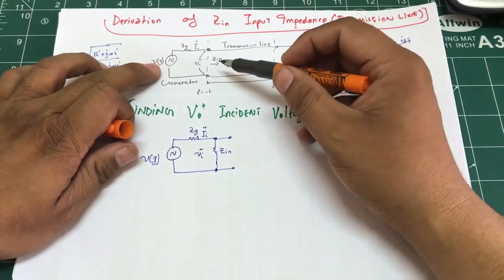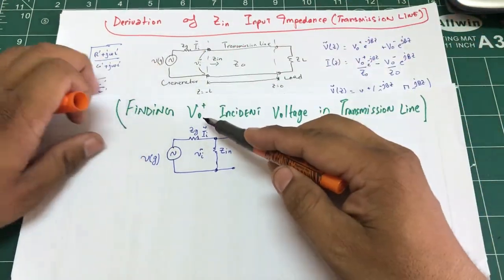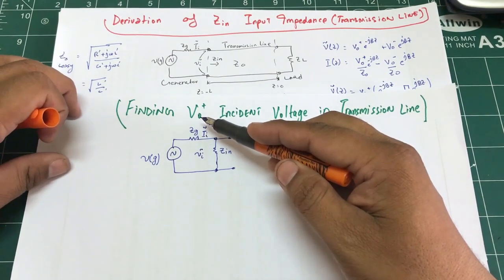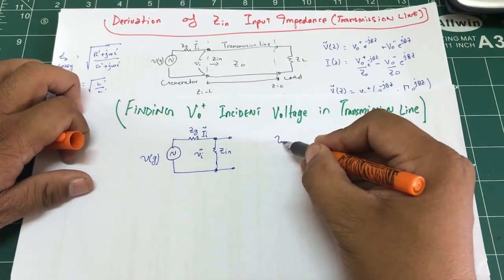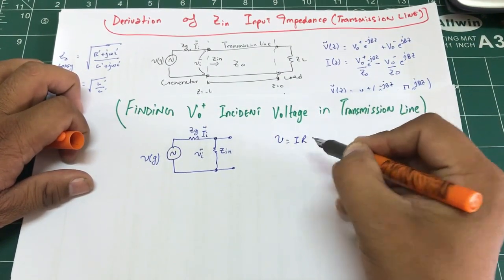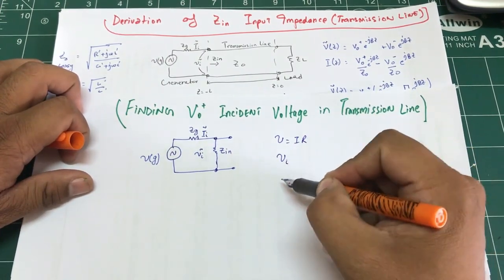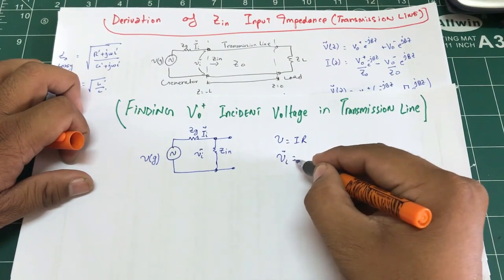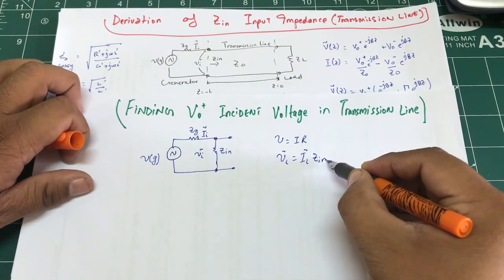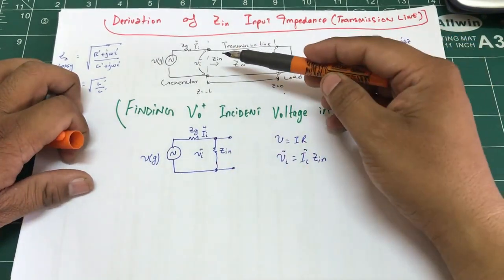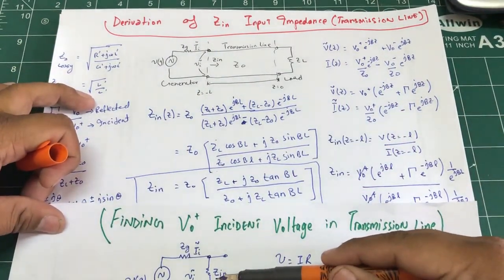Now I know what my Zin is. I want to know the actual voltage going into the transmission line and toward the load, which we called V₀⁺. Recall Ohm's law: V = I·R. In our case, this is Vi, the incident voltage, times i of Z with respect to my Zin. I'm basically replacing Zin in the circuit diagram as a resistor.